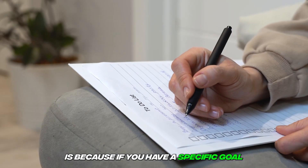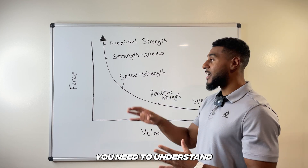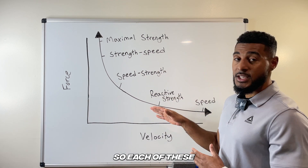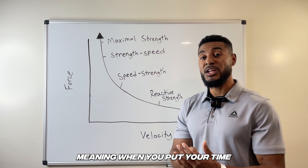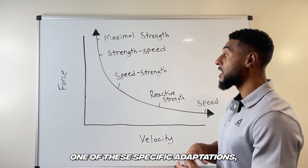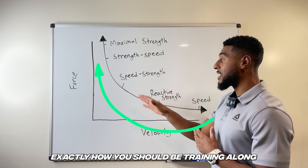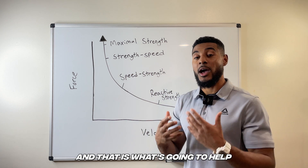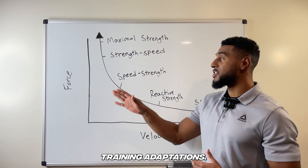Why this is super important is because if you have a specific goal — like improving speed — you need to understand what training adaptation to work on. Each of these are different adaptations, and training adaptations are very specific. When you put your time into any one of these specific adaptations, the body will respond and get better at that. Know your goal and know exactly how you should be training along this force-velocity curve. Let's take a deeper dive into each one of these training adaptations.